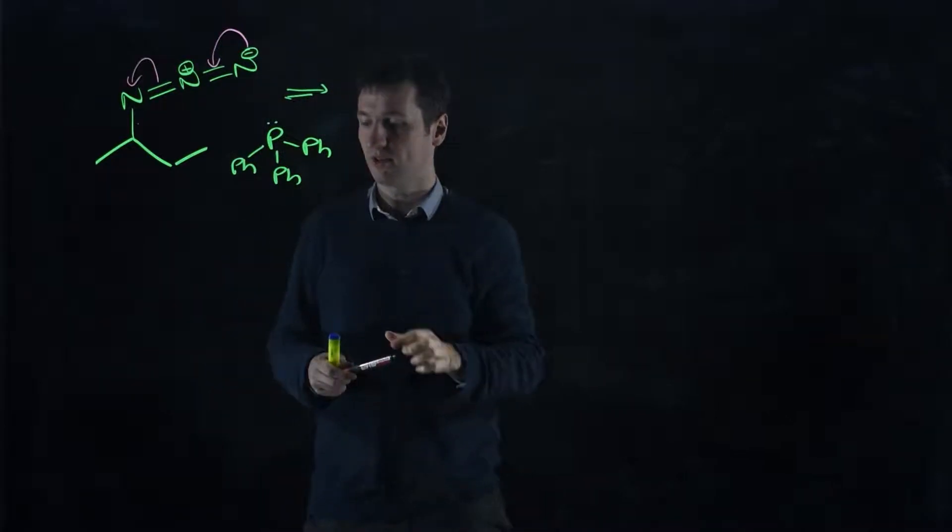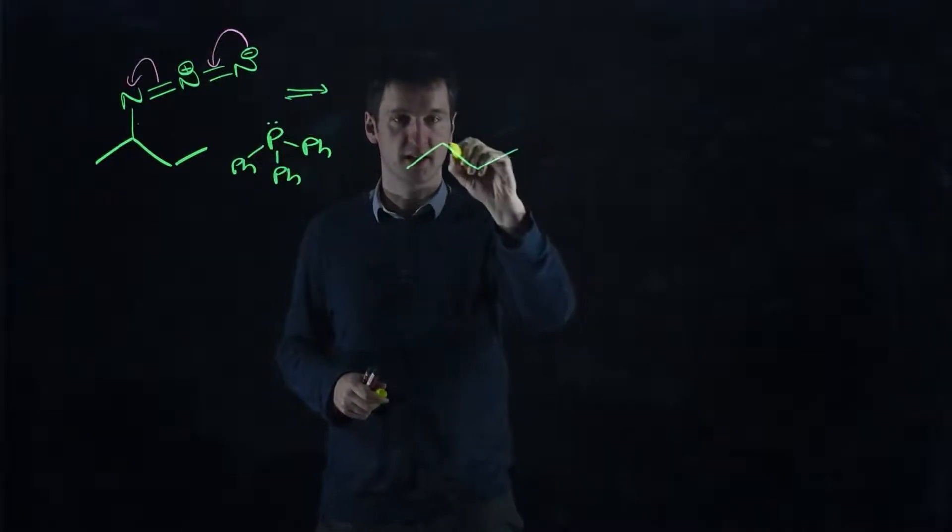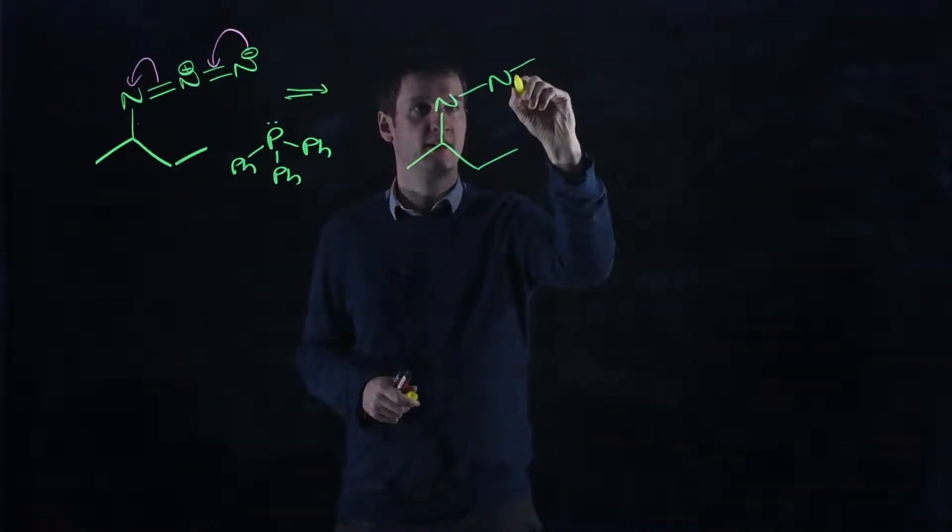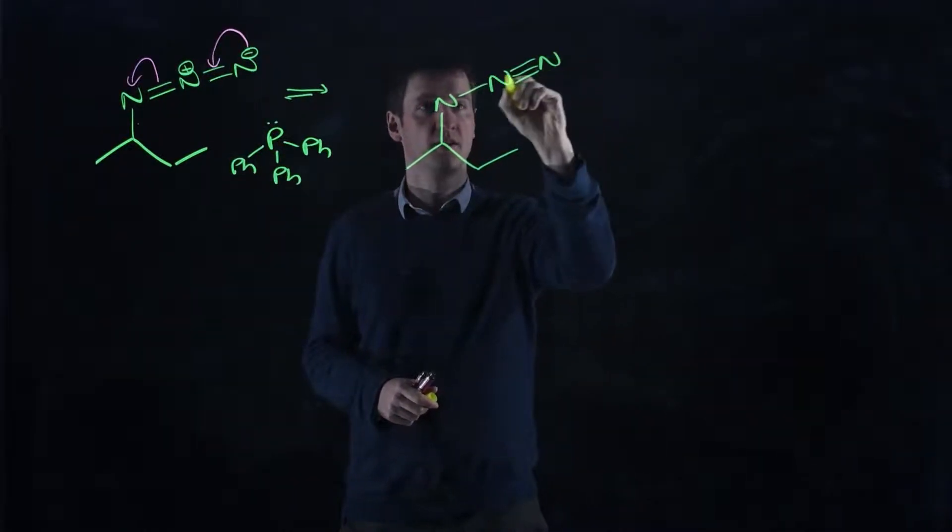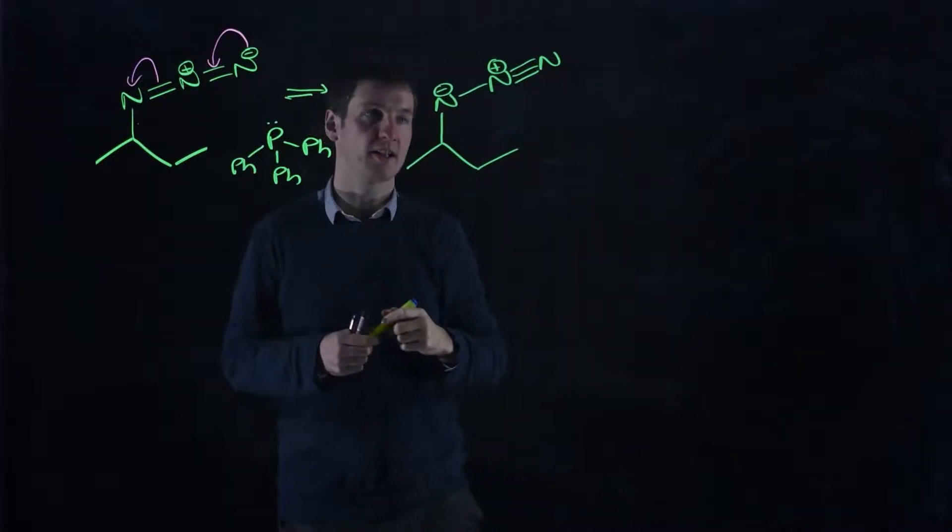So let's just redraw that out in that new form. So none of this has changed. That's still there. One of those bonds is still there. And two of those bonds are unchanged. We've added in a third one. So now this nitrogen is positive and this nitrogen has the negative charge.